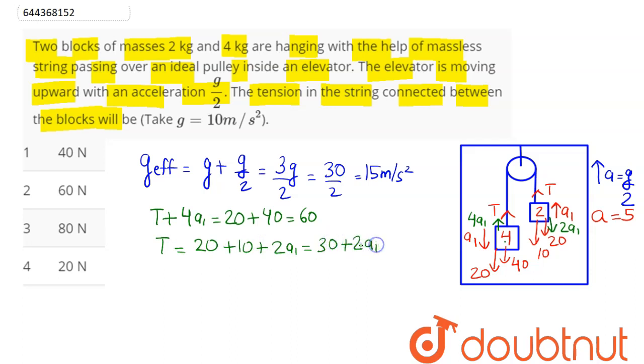T is equal to 20 plus 10 plus we can say here 2a1, which here comes as 30 plus 2a1. Now we need the value of tension, so here second equation we find 2a1 is equal to T minus 30.